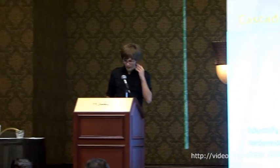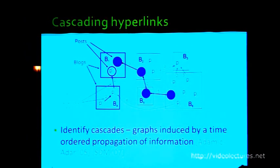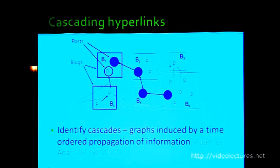Every square is a media site and every circle is a post, and these posts link to one another. Because everything is timestamped, I know how hyperlinks were created over time. I can now do a breadth-first search from the roots — pages with no outlinks — and follow information back the way it spread. Now I can study how these cascades look, and how sentiment changes as information propagates step by step.